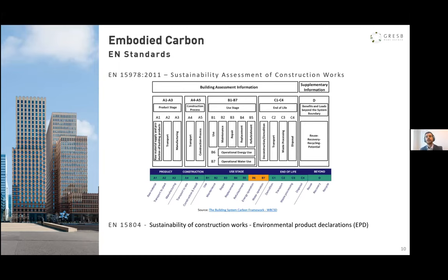Another standard is EN 15804, which covers environmental product declarations — it harmonizes a structure for creating those declarations, ensuring transparency and comparable data for the construction sector. There are three types of EPDs: first, cradle to gate, meaning the environmental footprint from extraction of raw materials until manufacturing of the product itself; second, cradle to gate with options, which includes the product stage plus any other lifecycle stage you wish to assess; and third, cradle to grave, which is a complete assessment of the environmental footprint across all lifecycle stages of the product.